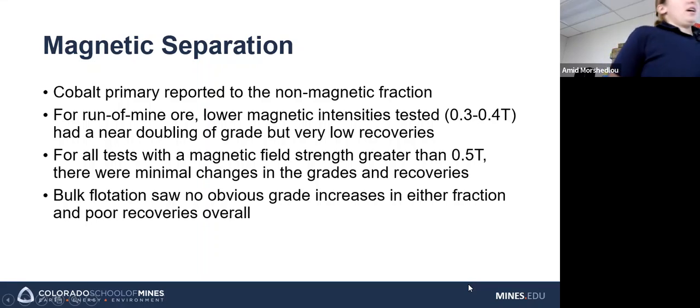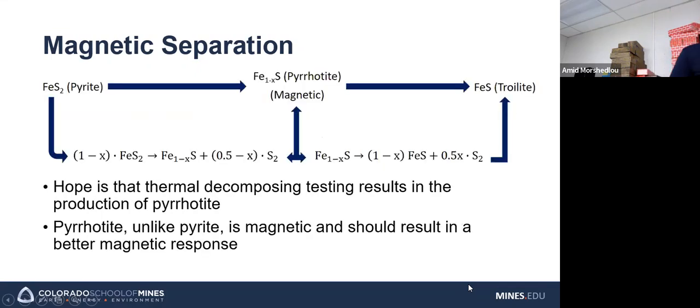So as this seems a little bit pointless, as we know nothing is magnetic, why would we test for magnetic response? Well, one of the other students is testing pyrometallurgy and the thermal decomposition of the pyrite, and this is a generalized flow sheet of how pyrite decomposes. So pyrite will decompose to troilite, which is also non-magnetic, but as it's decomposing, it temporarily turns into pyrrhotite, and pyrrhotite is magnetic and has a pretty good magnetic response.